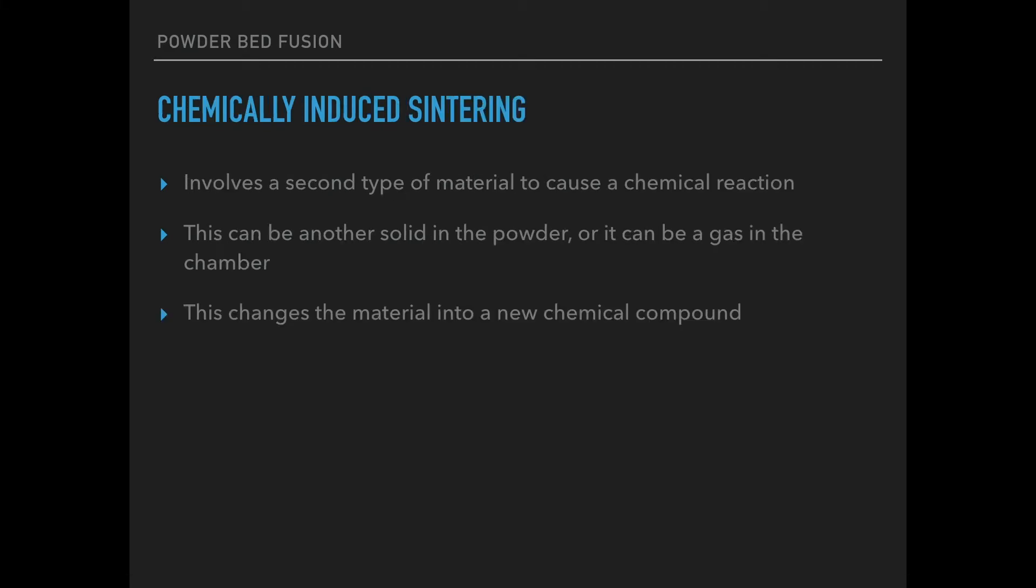Next is chemically induced sintering. This process involves either having a second type of powder mixed in with it first, or a different type of gas in the chamber that works with the powder to create a new chemical compound.